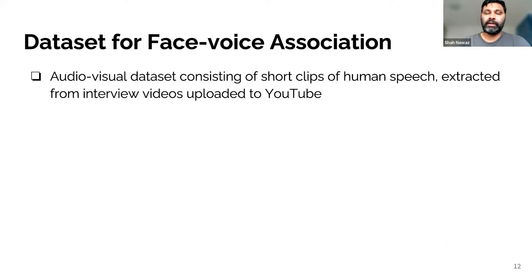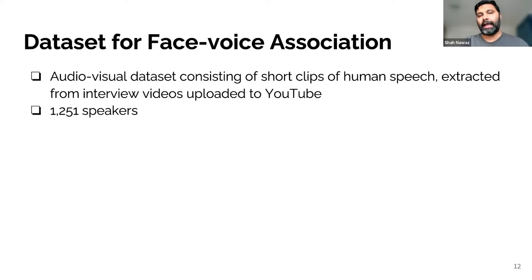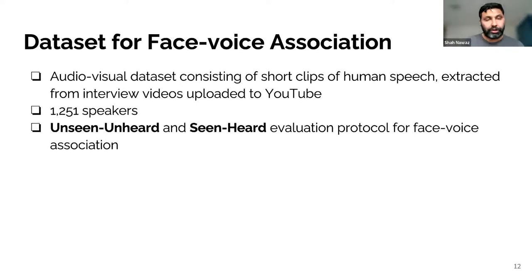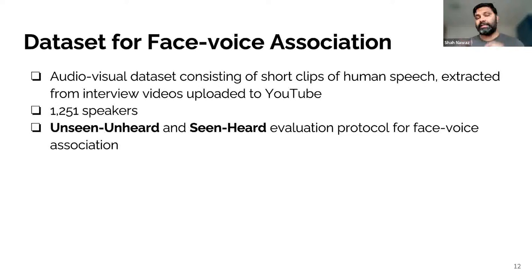One standard benchmark dataset is VoxCeleb, an audio-visual dataset consisting of short clips of human speech extracted from interview videos uploaded to YouTube. There are around 1,251 speakers, a balanced dataset with almost equal numbers of male and female identities. Two evaluation protocols were established: 'unseen and unheard,' where identities are disjoint from training, meaning the network has not heard or seen those identities; and 'seen and heard,' where some samples or videos are heard and seen by the network, though the specific video samples used at evaluation are different from training.